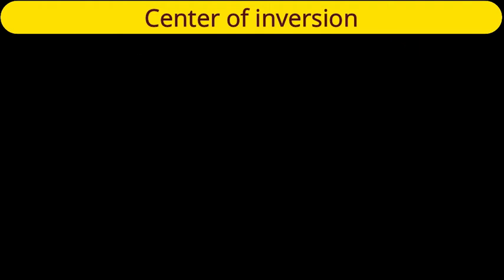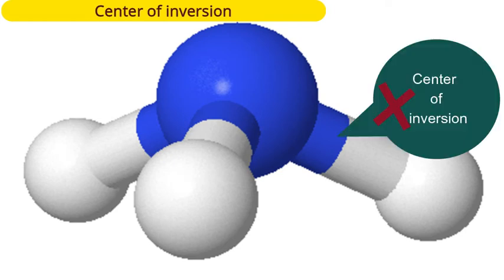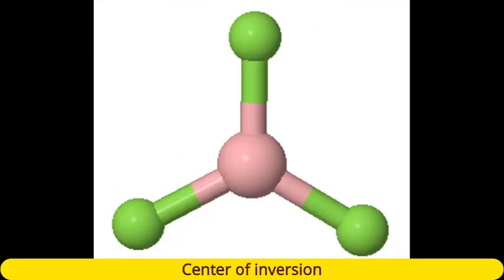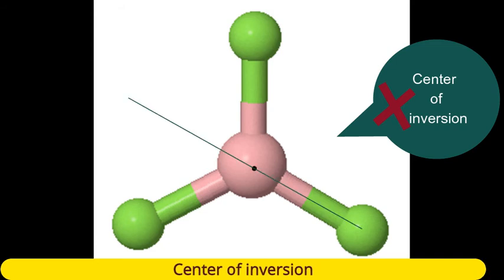Next is the ammonia molecule. There is no center of inversion in ammonia. Another molecule is planar BF₃. Center of inversion is also absent here, because if we take a point from a fluorine atom, draw a line up to the central boron, and extend the line to the same extent, we do not get the other fluorine. So center of inversion is absent in BF₃ as well.